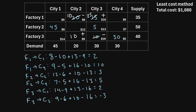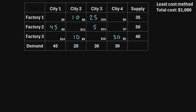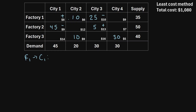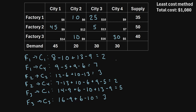Using these updated values, we calculate the closed loops again for all unallocated cells. For factory one to city one, we draw a loop and get 8 minus 10 plus 13 minus 9, which equals 2. After performing all the calculations on each unallocated cell, we find that none of these values are negative, which means we have arrived at the optimal solution.